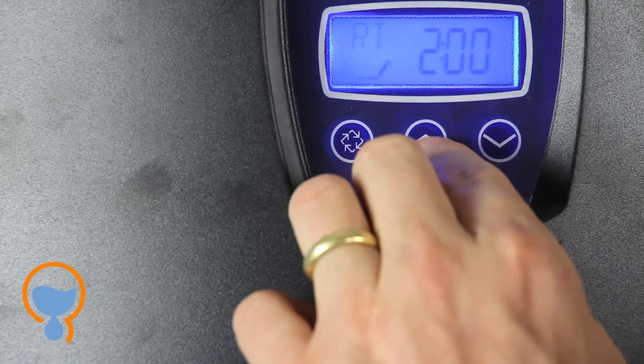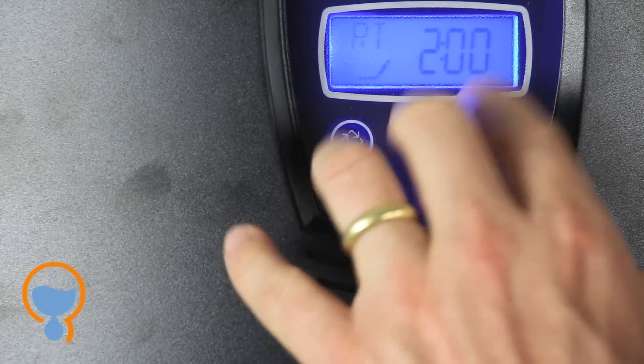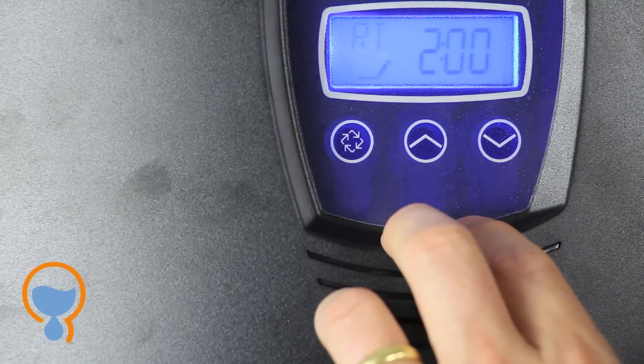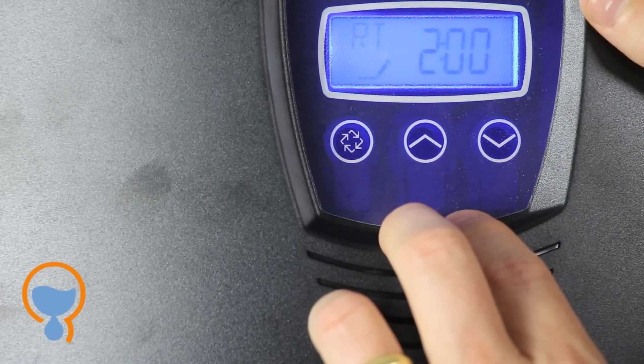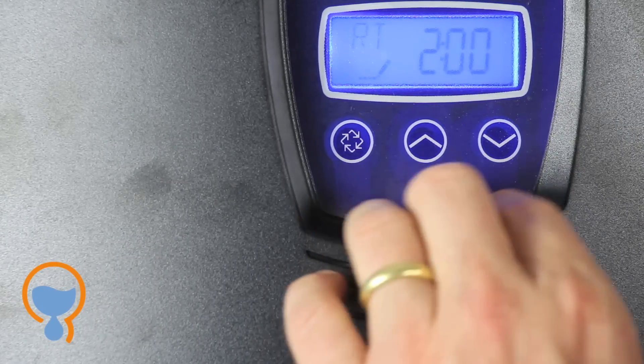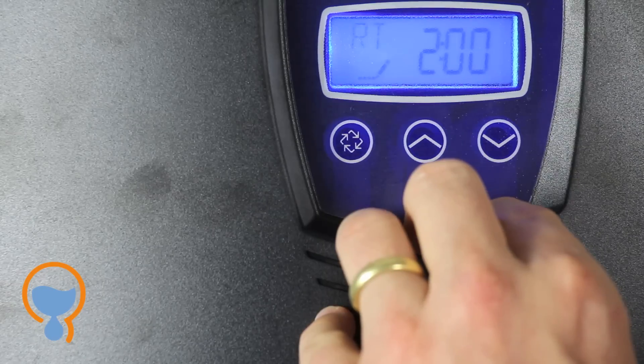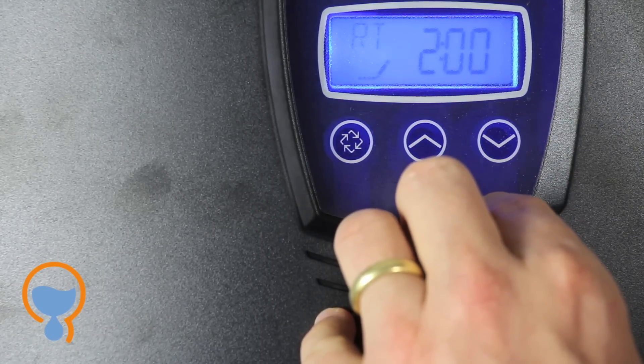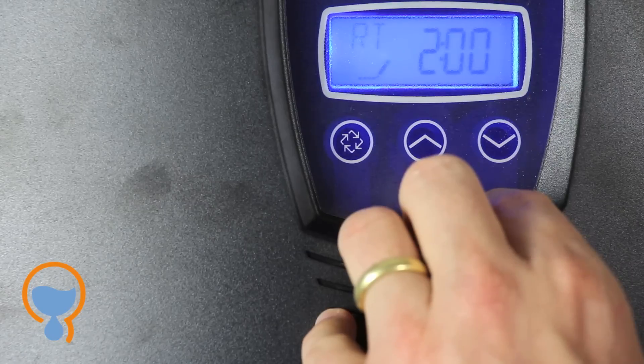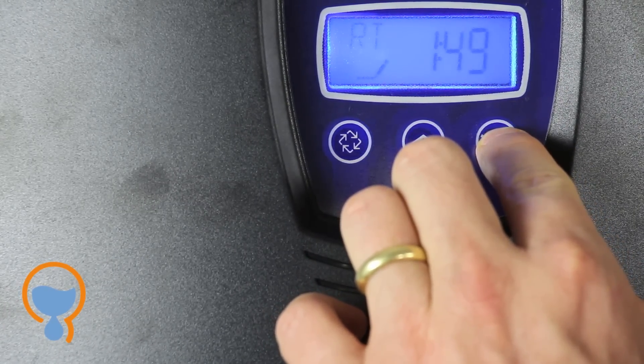Regeneration time. You can choose any time you like for the softener to regenerate. The Flex 7000 SXT in the way we're setting it up here is in the meter delayed configuration. So it will only regenerate at the time that you say on the day that it needs to regenerate. Lots of people, 2 AM is the ideal time in the middle of the night. That's what this control valve defaults to. Sometimes for families who are out of the house all day, 2 PM isn't a bad time either. So why don't we set this to 2 PM in this case.